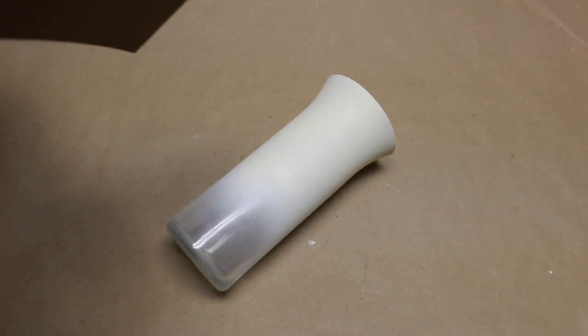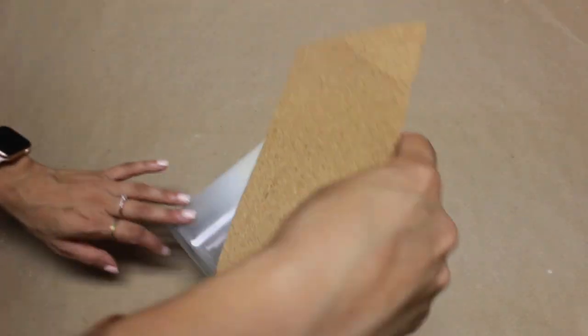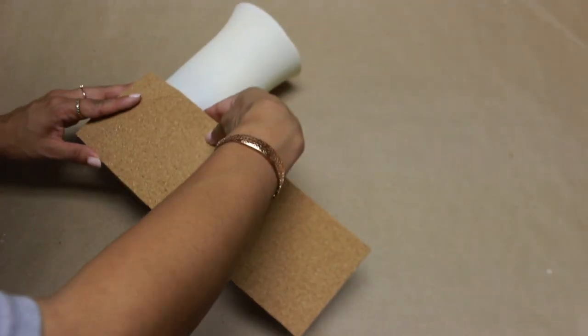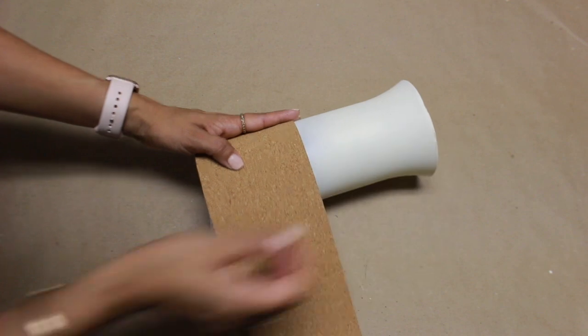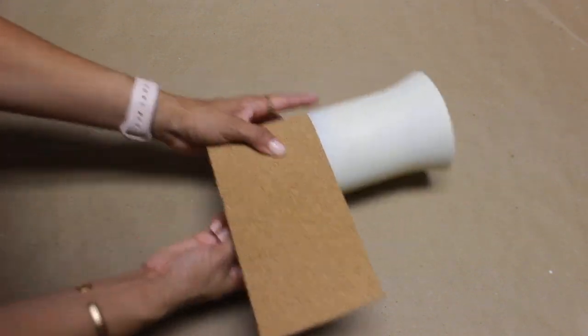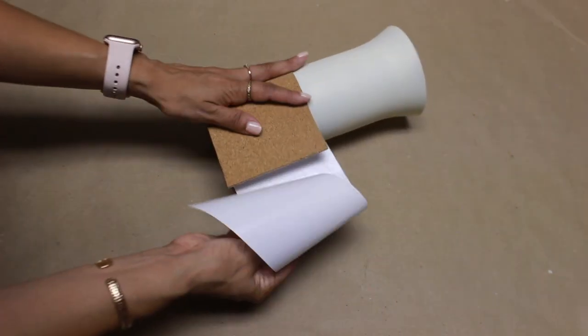But anyways, now what we're going to do is just take that part off and put it on the bottom. And I just overlapped the cork square in the back of it. And you can cut off the excess if you want to. And I also added a little bit of hot glue.